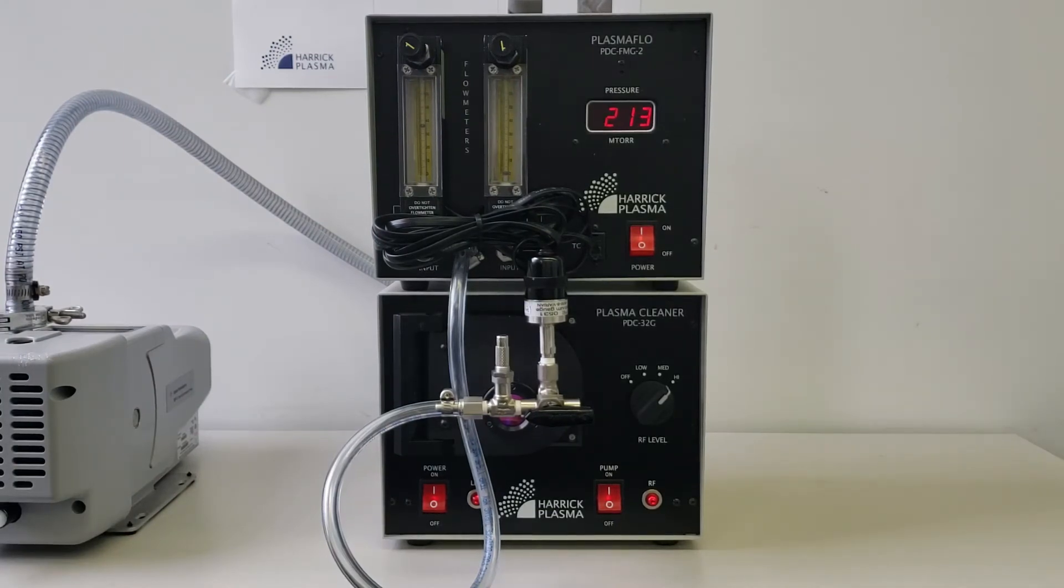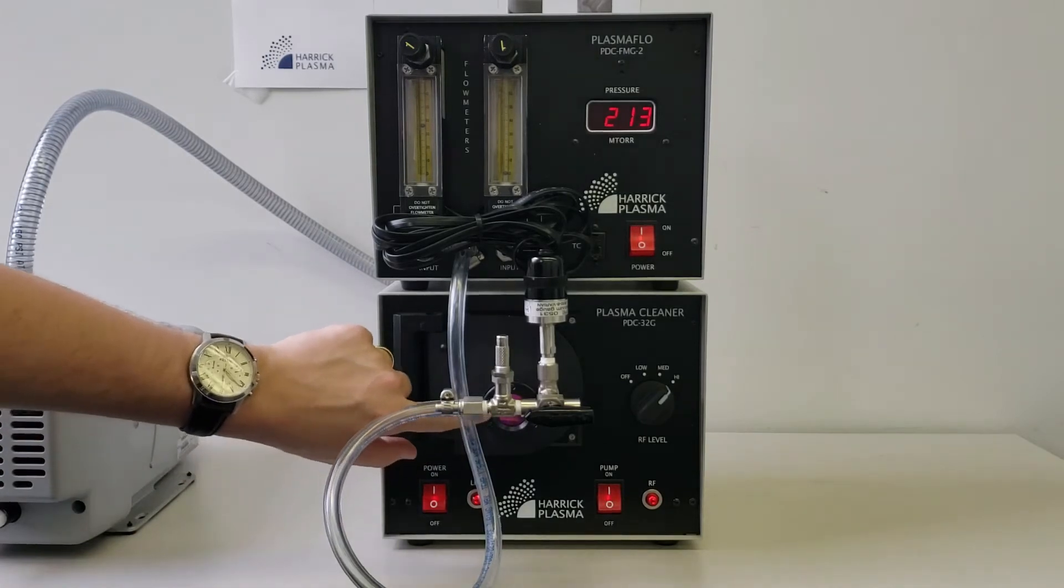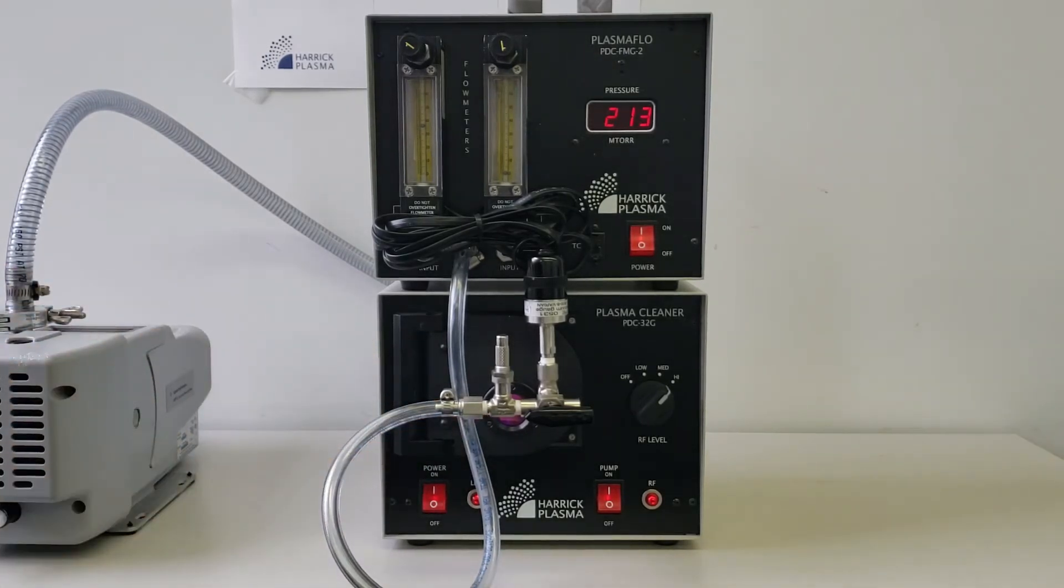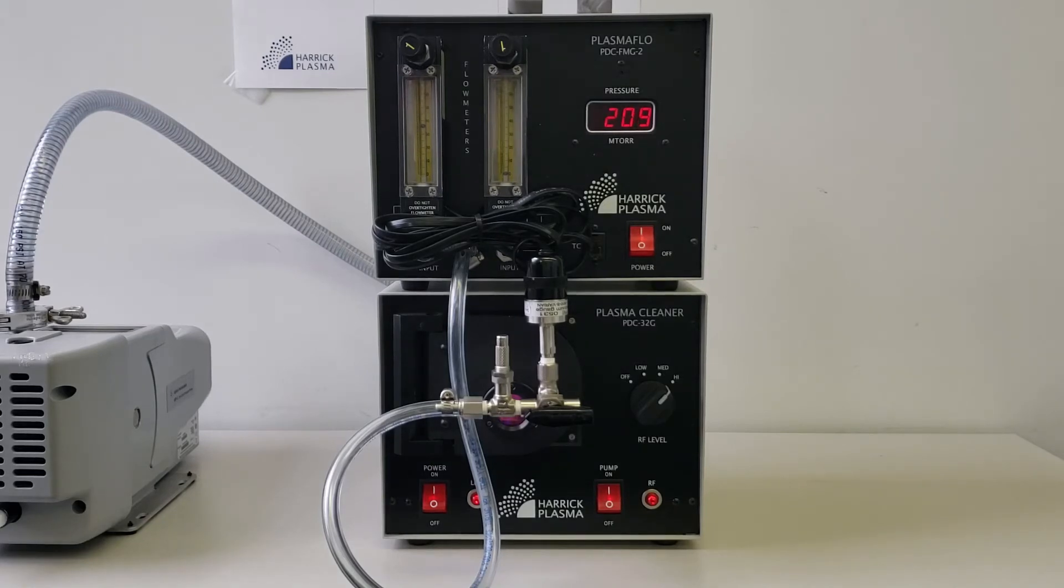While air plasma is a visually intense purple or pink, oxygen plasma is a much less intense blue or white color. We highly recommend using a vacuum gauge during plasma treatment to ensure process consistency. In some cases, oxygen has been found to be more effective for bonding due to a higher concentration of reactive oxygen species.